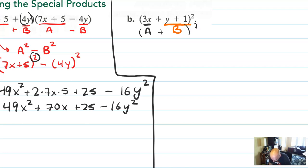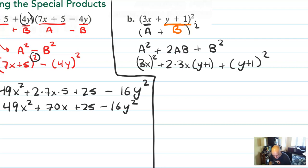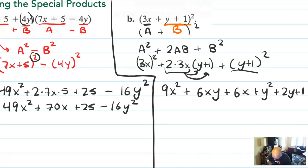So when I have this, that a plus b squared, the pattern is a squared plus 2ab plus b squared. So what happens here? Well, then I have 3x squared plus 2 times 3x times y plus 1. And then I have y plus 1 squared. And then you kind of got everything out. It's all in one line. Now you just have to simplify it. So we have 9x squared plus 6xy plus 6x.